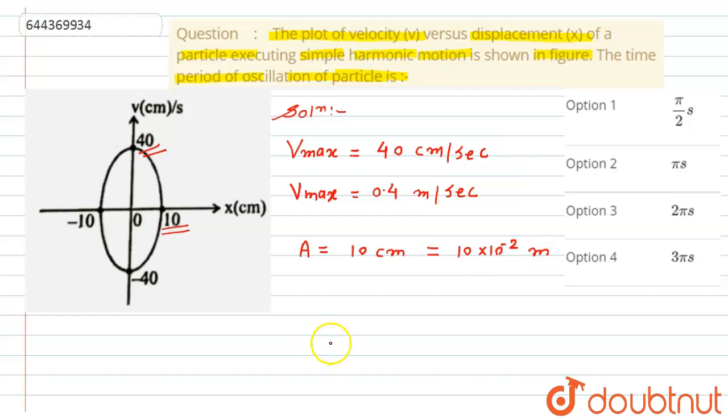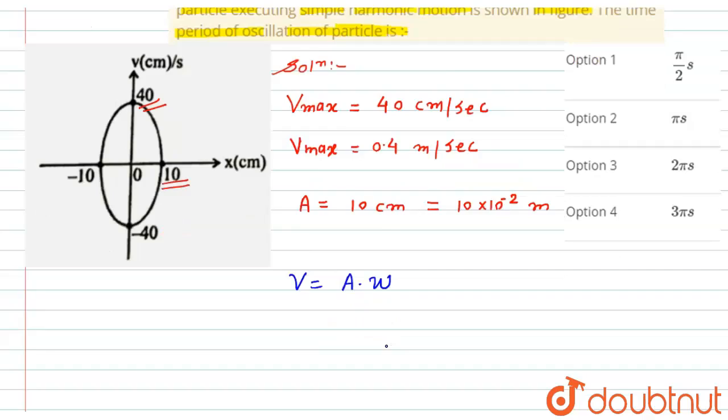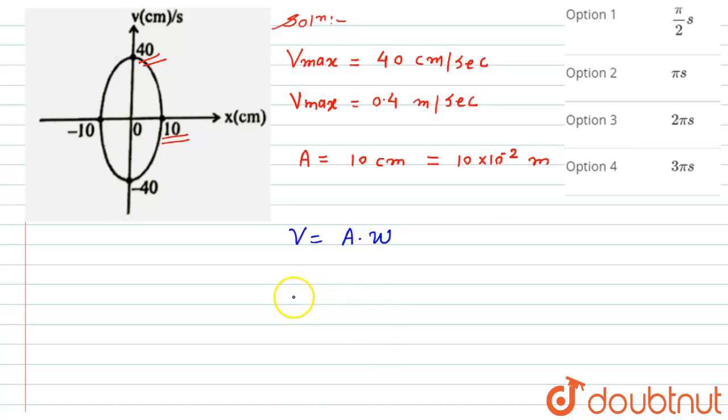Now we have to find here the time period of oscillation. We know the relation that is the velocity of the particle is given by v equals to A into omega, where omega is the angular velocity. As we have the values of v and A, we can find the angular velocity.